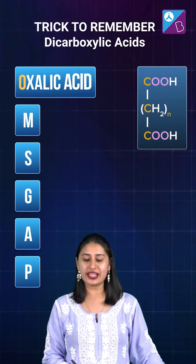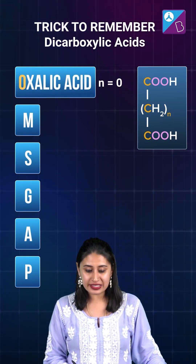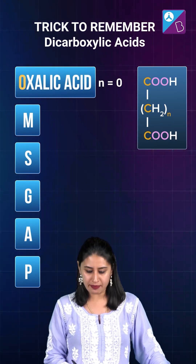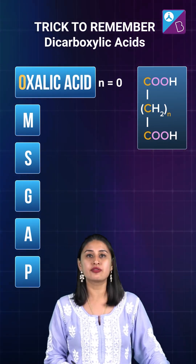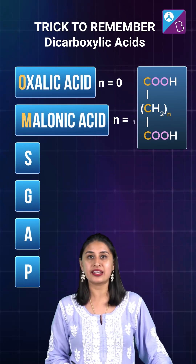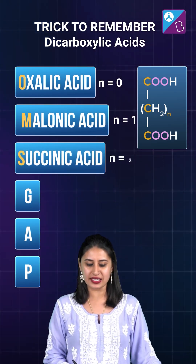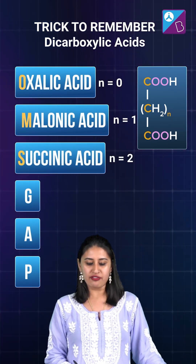So when we have oxalic acid, N is equal to zero. Then we have M, which stands for malonic acid, N is equal to one. Then we have succinic acid, N is equal to two.